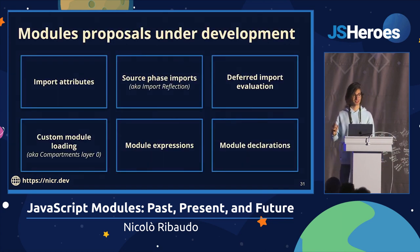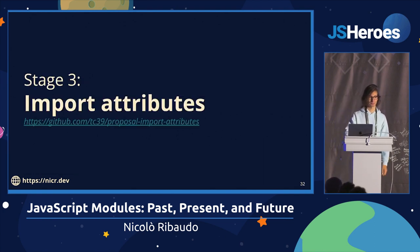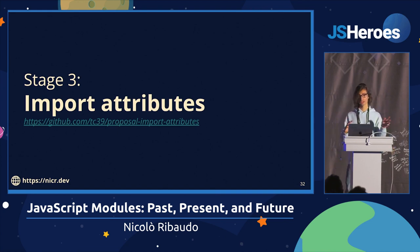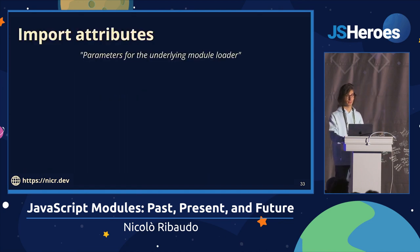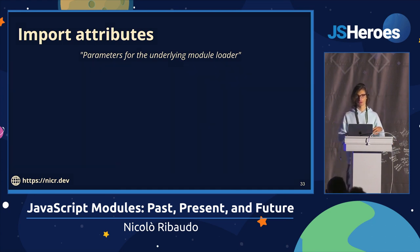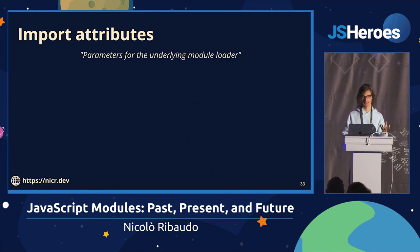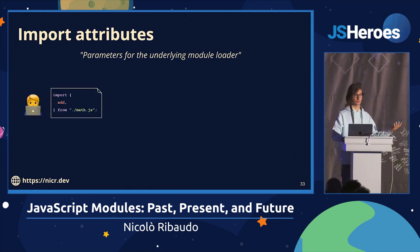The first of the six proposals is called Import Attributes. It's at stage three, which means it's almost ready and browsers are implementing it now. Import Attributes are basically parameters for the module loader — for whatever is inside your browser or inside Node.js — that, given a file path, gives you an executable module.